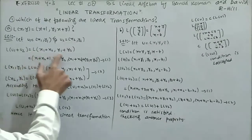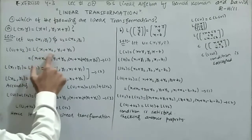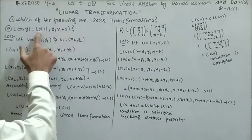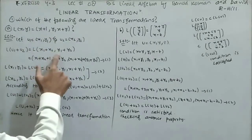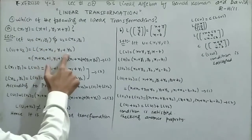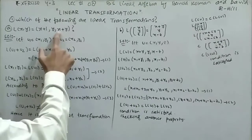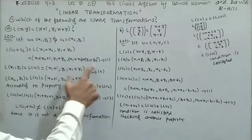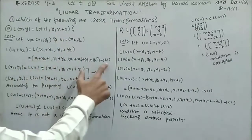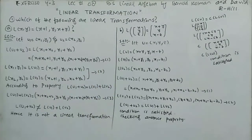Now by putting this value in the given function, my x is x1+x2, so it becomes x1+x2+1, my y is y1+y2, and also x1+x2 and y1+y2. This is L of u1+u2.